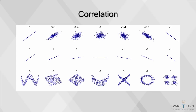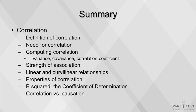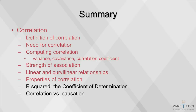Here's a look at some additional measures of correlation using scatter charts. This concludes our video on correlation. Today we discussed the definition of correlation, the need for correlation, details on computing correlation including variance, covariance, and the correlation coefficient, strength of association, linear and curvilinear relationships, properties of correlation, r-squared, the coefficient of determination, and correlation versus causation.